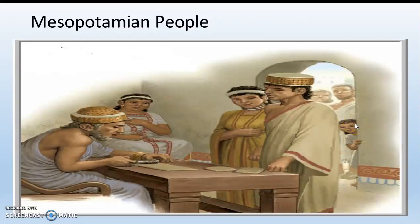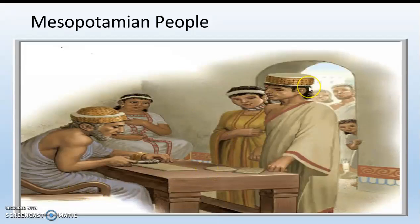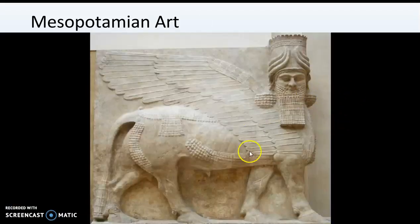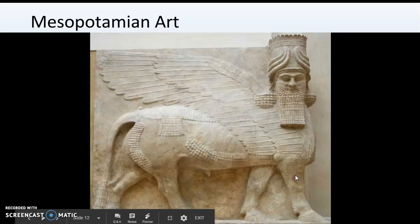This is what Mesopotamian people look like — they have tan skin, similar to modern-day Middle Easterners or Arabs. They're wearing cool clothing like dresses; notice the men aren't wearing pants. They have distinctive hats, and you can see chairs and tables that look not too different from what we'd have nowadays — walls, furniture. This isn't a life completely unlike our own. This Mesopotamian art is a stone carving of one of their gods: part bull, part eagle, and part human. Notice how intricate it is — you can really make out the different characteristics of the god.